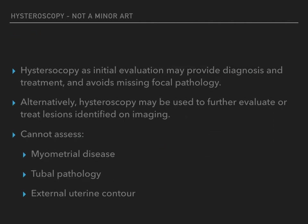There are several approaches to evaluating women with abnormal uterine bleeding or intrauterine lesions: pelvic sonography, saline infusion sonography, endometrial sampling, or hysterosalpingography. By using hysteroscopy for the initial evaluation, one can potentially combine evaluation with treatment. Furthermore, hysteroscopy avoids the risk of missing focal pathology, as may occur with blind endometrial sampling. Alternatively, hysteroscopy can be used to further evaluate or treat lesions identified on imaging studies, or to confirm the absence of disease when symptoms persist and initial diagnostic tests are normal. However, hysteroscopy cannot assess myometrial disease like adenomyosis, tubal pathology, or the external uterine contour.